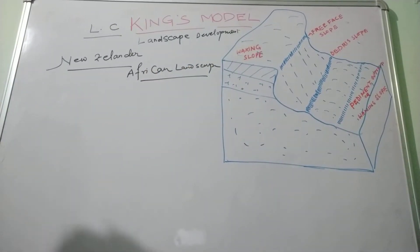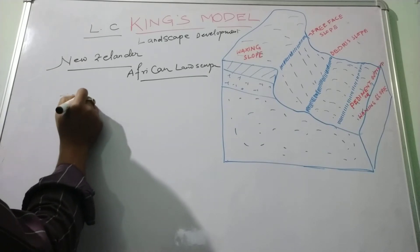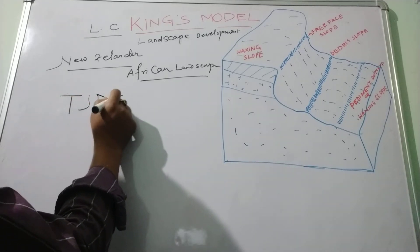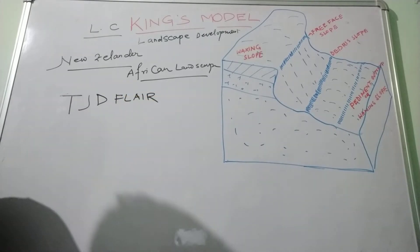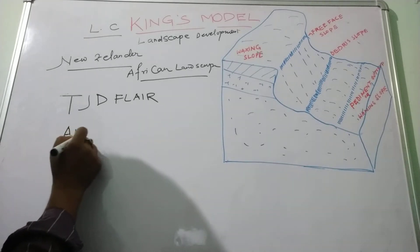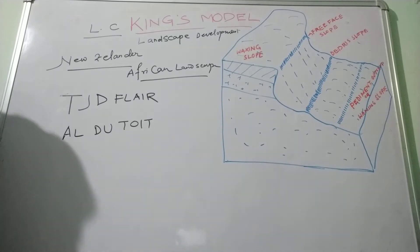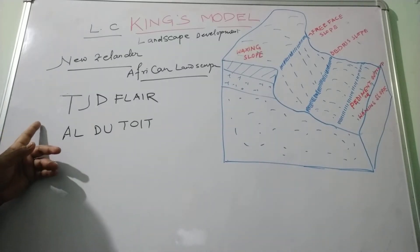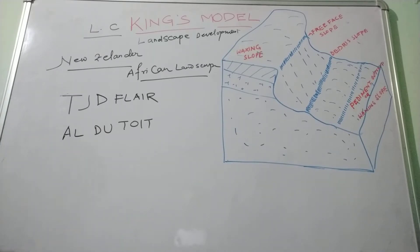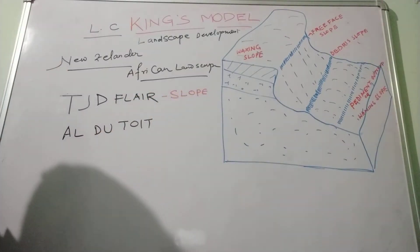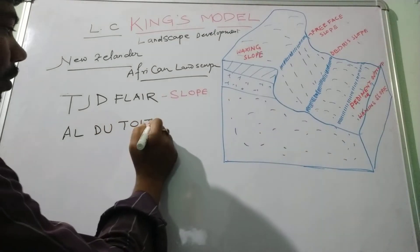King was mainly influenced by two important geographers. One is known as Joly and another important geographer is du Toit. King's model is basically based on their concepts, dealing with the ideas of Joly on slope and du Toit's concept on tectonics.